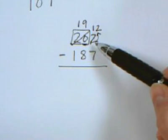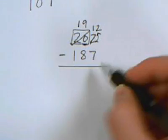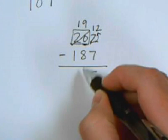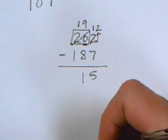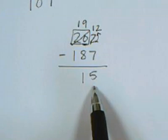So now instead of 2 we have 12, and we can do 12 minus 7 is 5, 9 minus 8 is 1, and 1 minus 1 is nothing. So 15 is my answer for this problem.